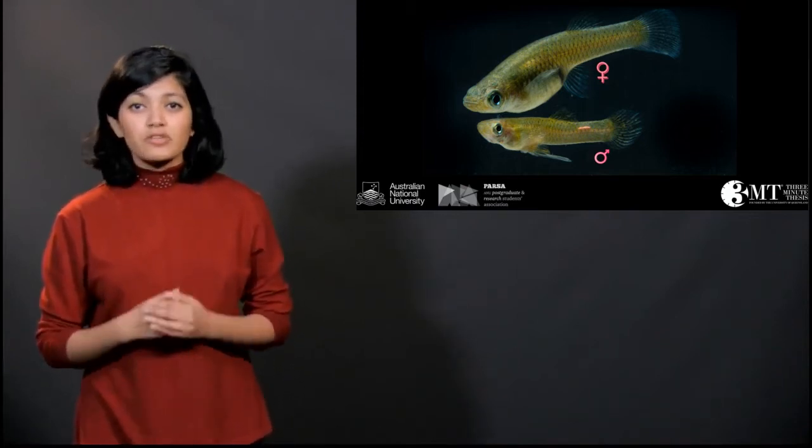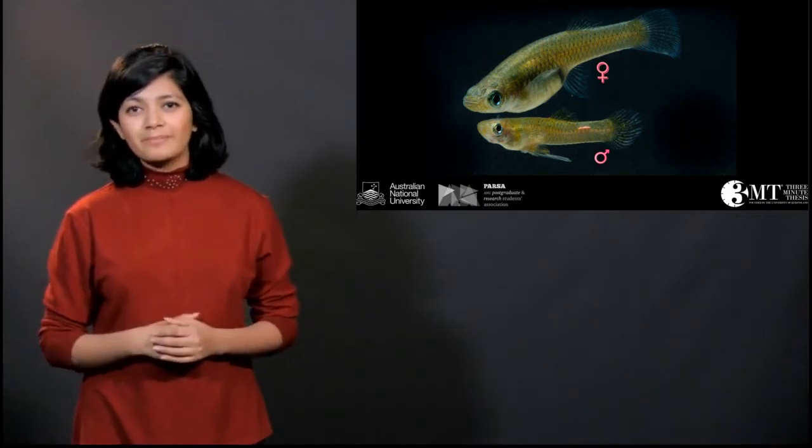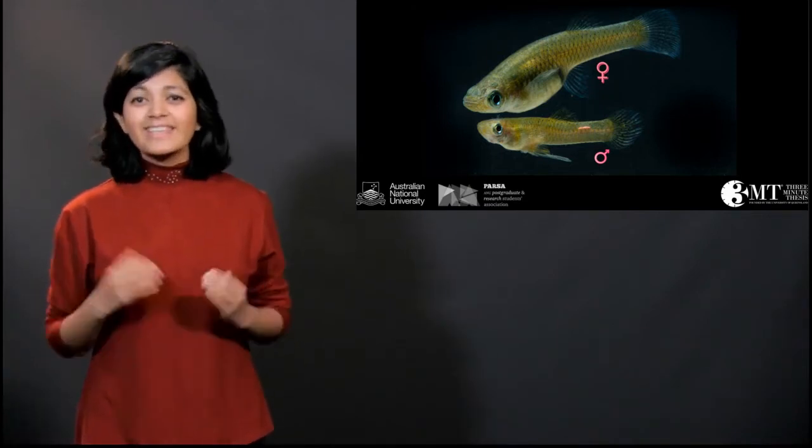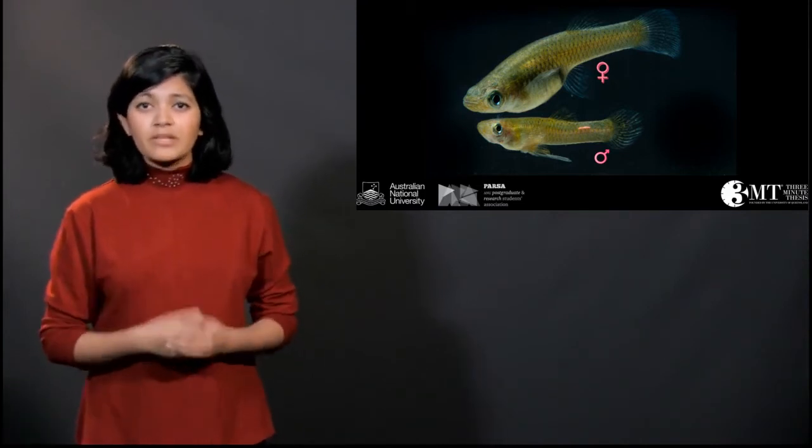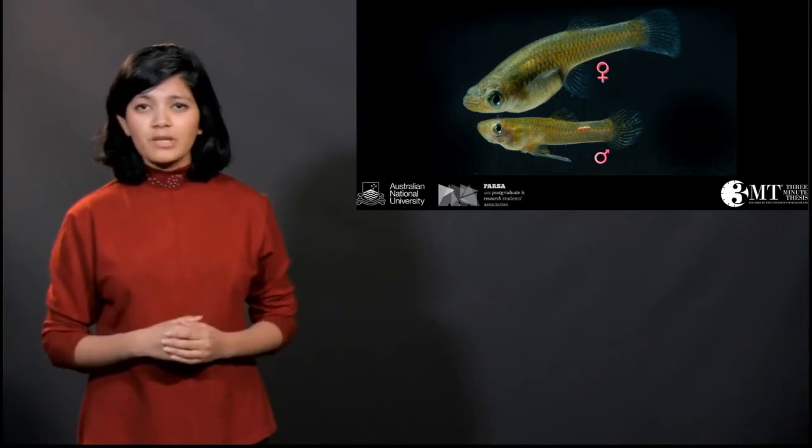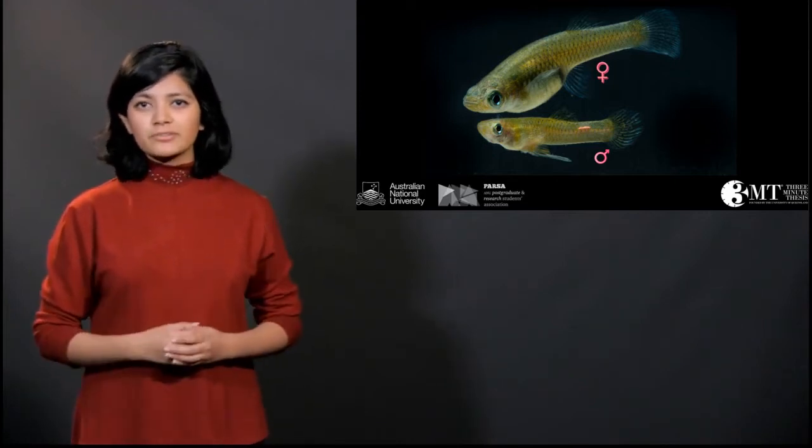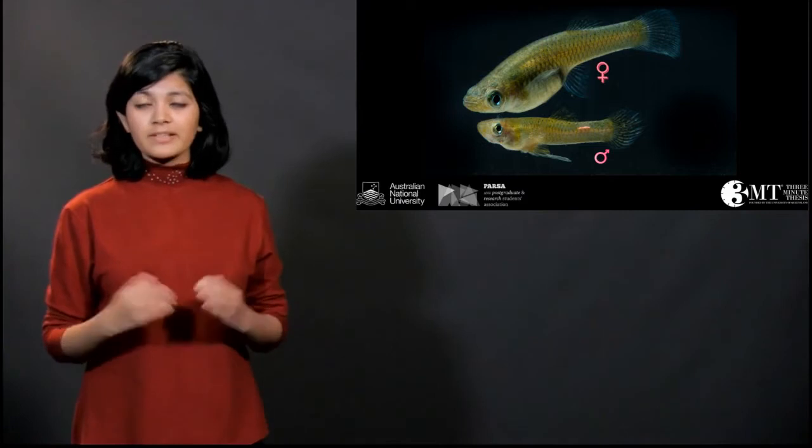A female may prefer to mate with a young or an old male. Why, you ask? Studies have shown that male age can affect female reproduction. For example, young males may have better sperm, while older males can provide other resources, like more food or better parental care.